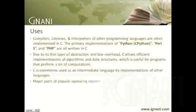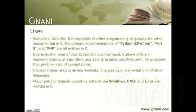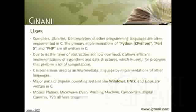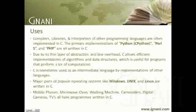Major parts of popular operating systems like Windows, Unix, and Linux are written in C. This is because, even today, when it comes to performance, C beats everything. Most of the device driver programs are also written in C. The programs used in mobile phones, microwave ovens, washing machines, camcorders, digital cameras, and TVs are all written in C, due to the constraints of limited memory and processor speed, but still requiring optimal performance. C has also been widely used to implement end-user applications, but much of that development has shifted to newer languages.